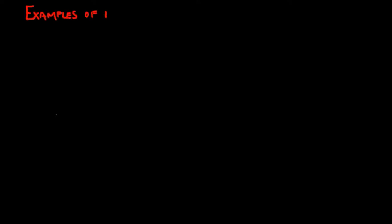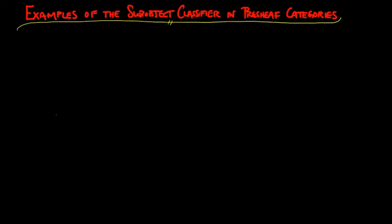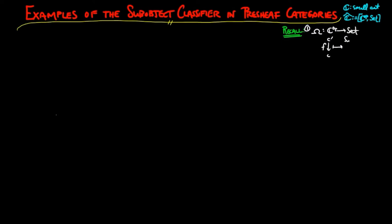In this video, we construct the sub-object classifier for each of the six example categories of pre-sheaves. If C is a small category with category of pre-sheaves C-hat, recall that the sub-object classifier Ω is a pre-sheaf taking an object C-prime to the set of sub-objects of the representable of C-prime, and a morphism f to the pullback along underline f.